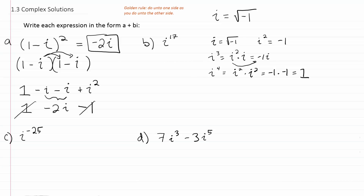When you go to the next power, i to the fifth, you're basically repeating the cycle, because i to the fourth is just 1, and i to the fifth is i to the fourth times i. Since i to the fourth is 1, this is just 1 times i, which is i to the first. So it's like a circle or a cycle.